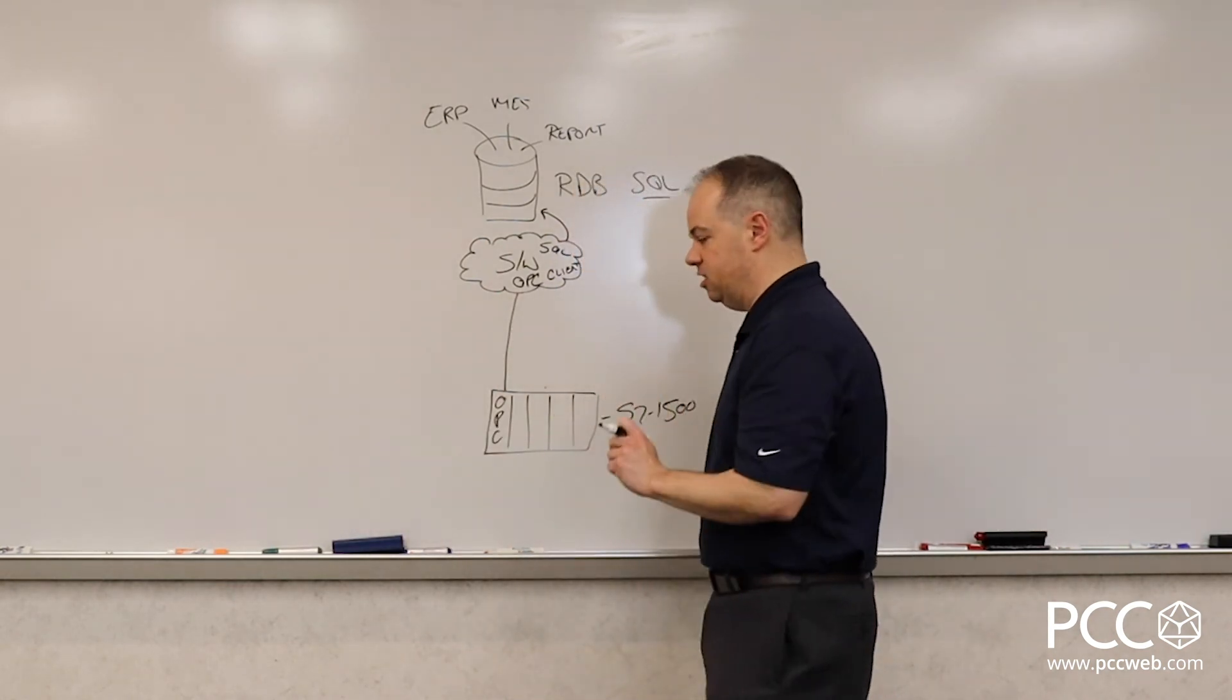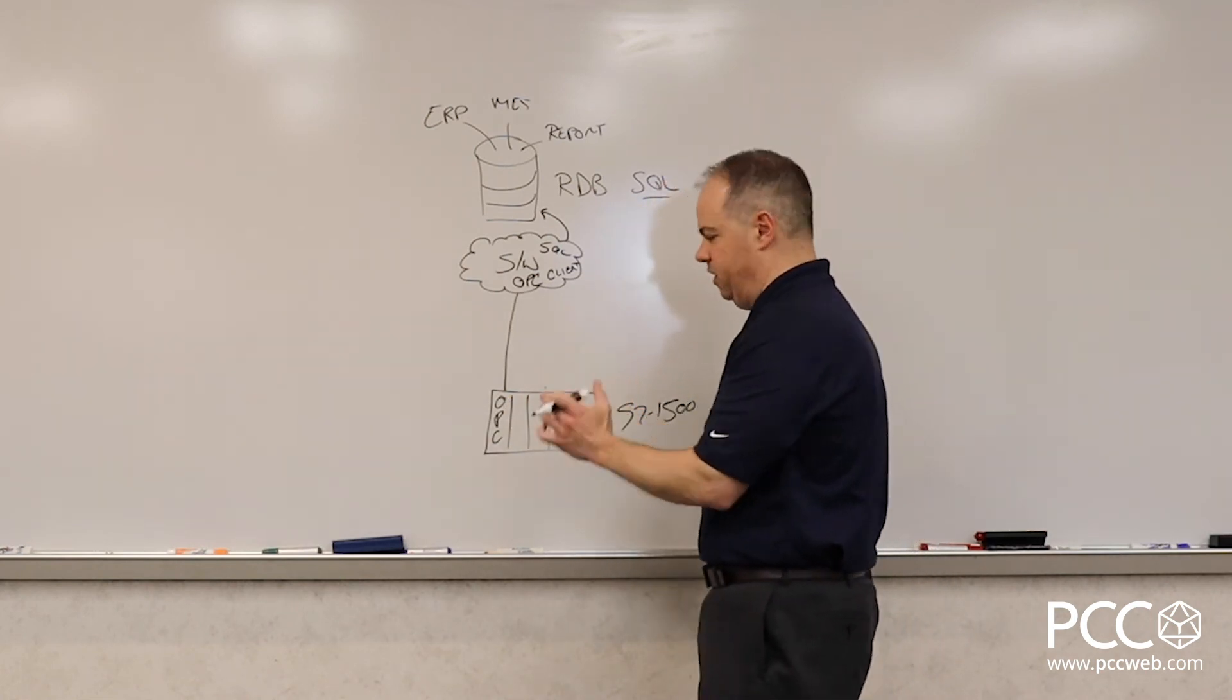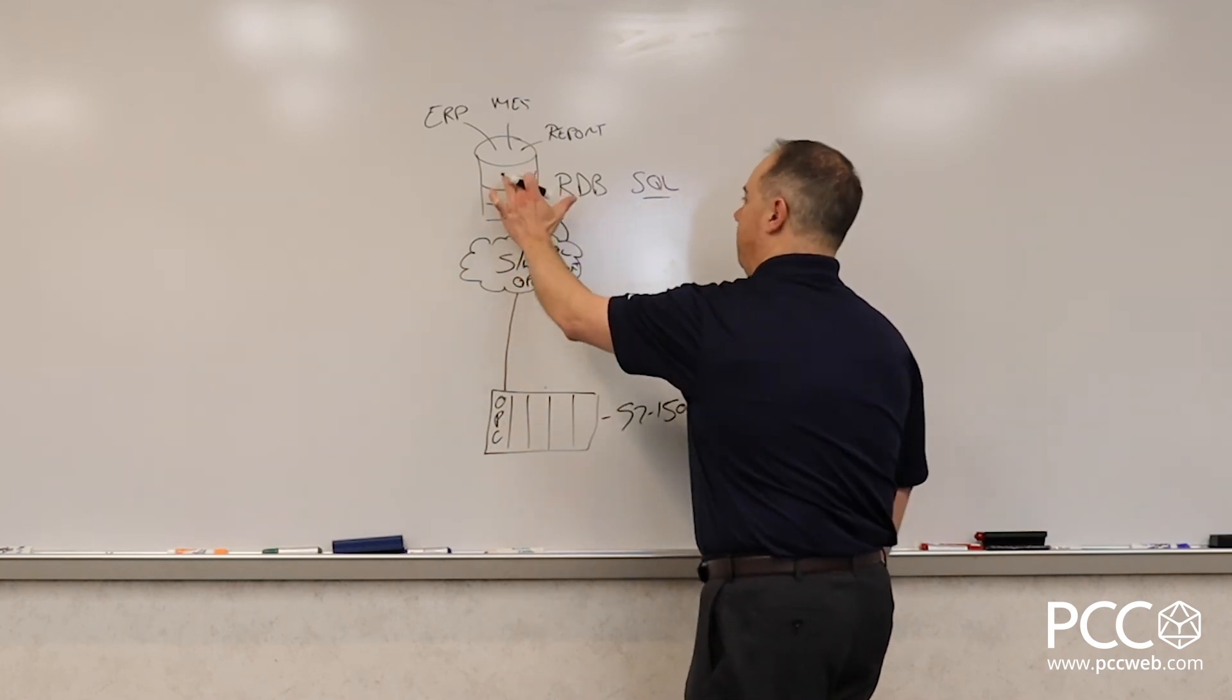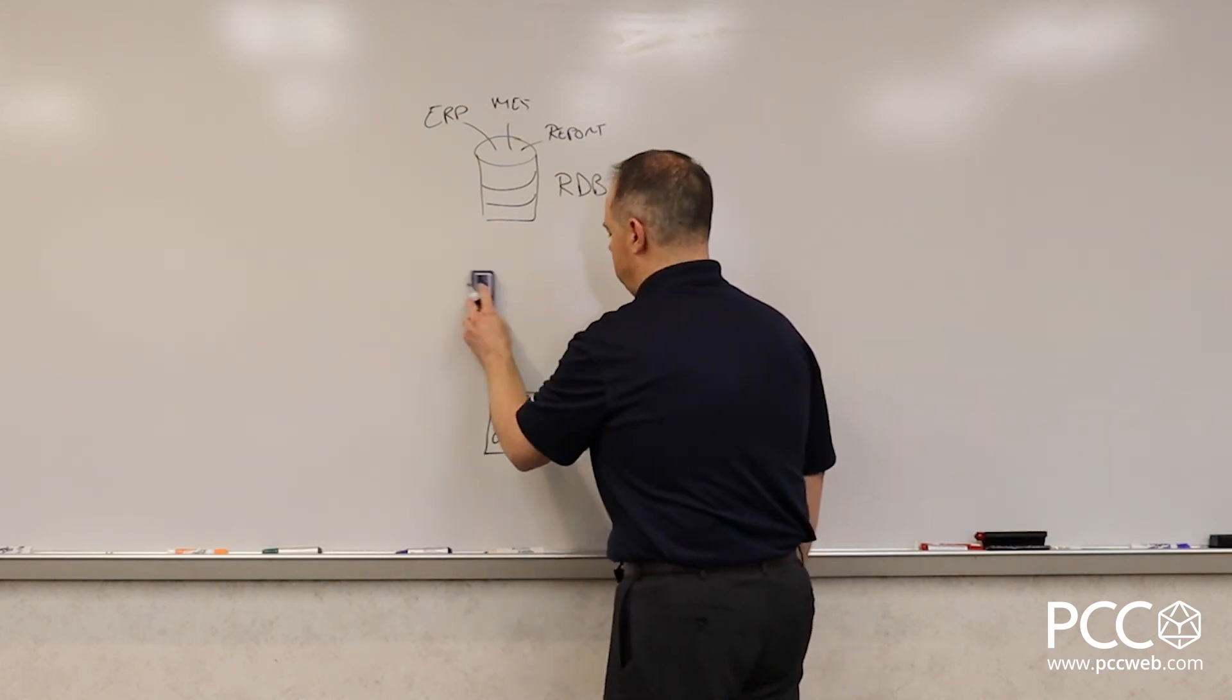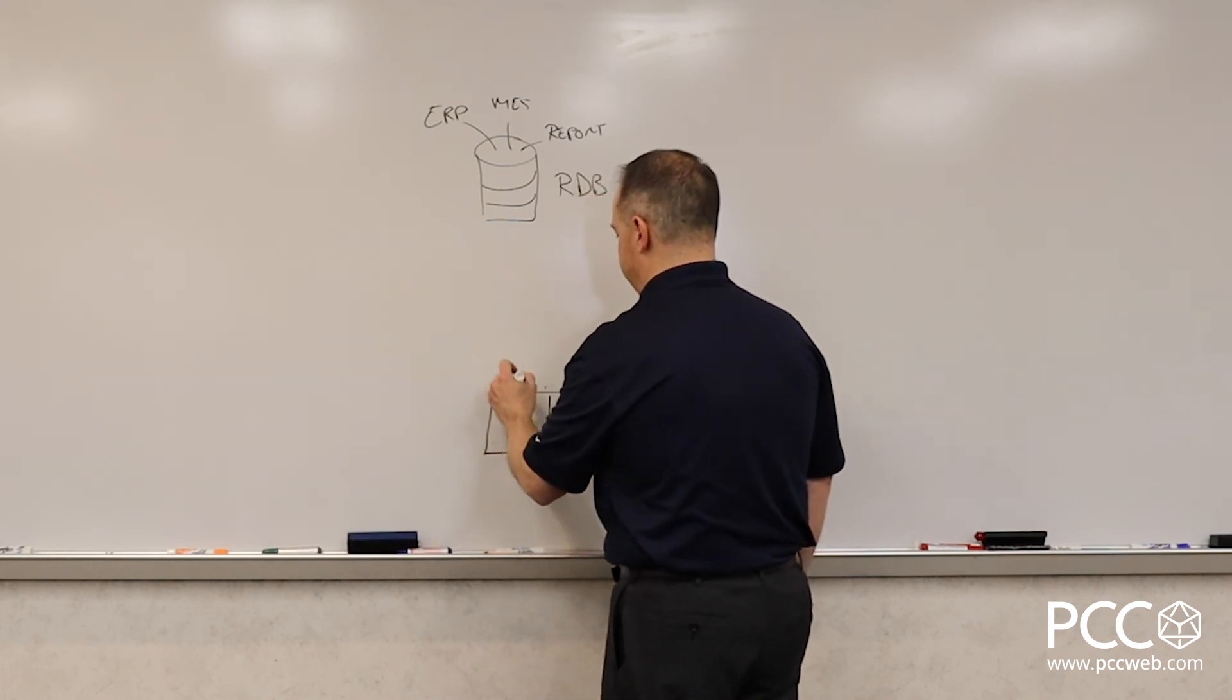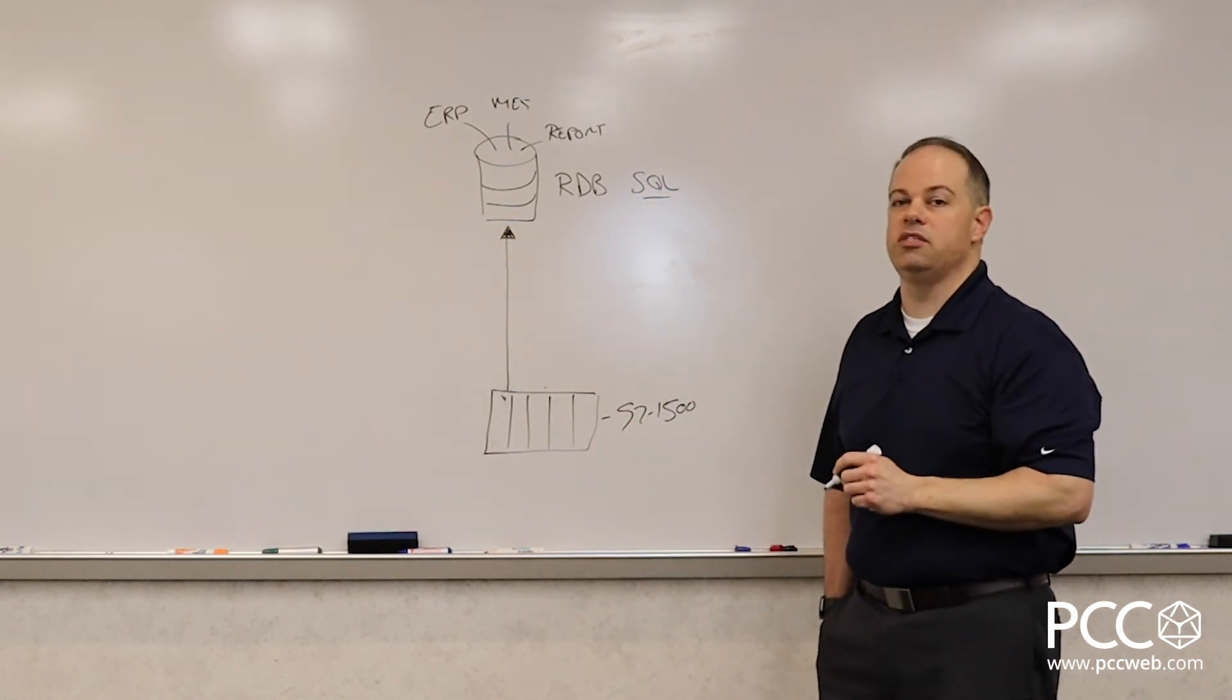But we can take this a step further. What if the transaction, we just simply need to get data like we talked about in the beginning of this video, we just need to get data from the PLC up to the database and potentially back to the PLC again, we can actually go both directions with this. Well, in that situation, what Siemens has done is they have written a set of program blocks.